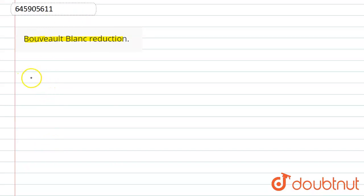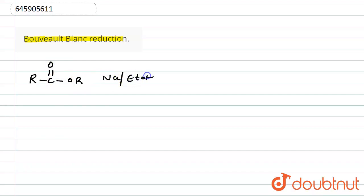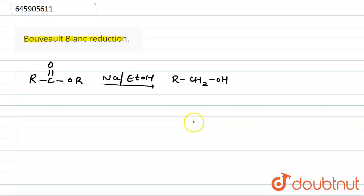The question is about Bouveault-Blanc reduction. In these conditions, we use an ester, and that ester is reduced to an alcohol by using sodium in ethanol (EtOH). So the ester is reduced to an alcohol as R-CH₂OH. Now we have to discuss how this reduction is possible and what the mechanism is.